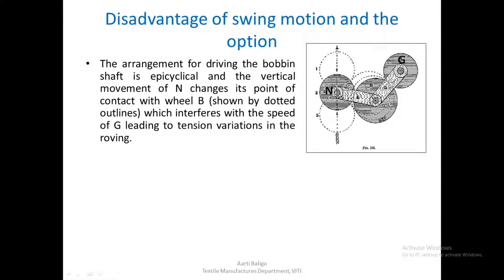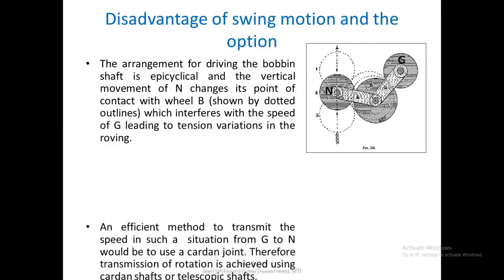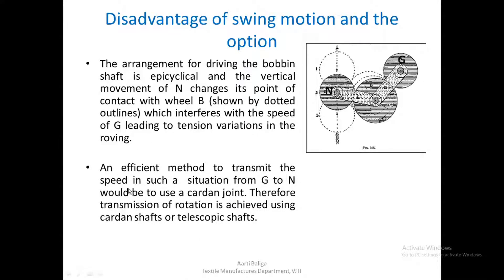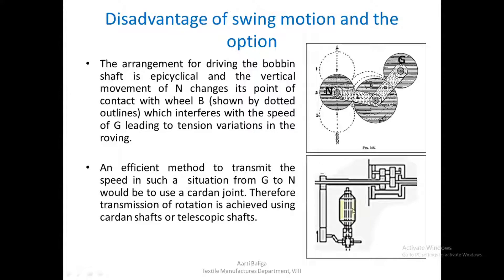How to reduce the tension variations that might develop in the roving? There is one more option available. Modern machines use this: an efficient method to transmit the speed in such a situation from G to N would be to use a cardan joint. Therefore, transmission of rotation is achieved using cardan shafts or telescopic shafts. This differential box gear would drive the N gear of the bobbin shaft, and further on this would be connected with the bobbin rail via a cardan shaft.